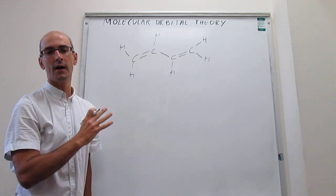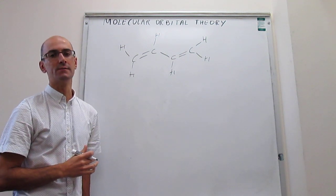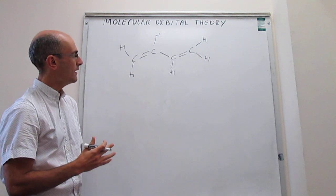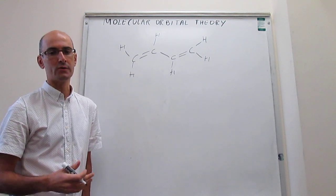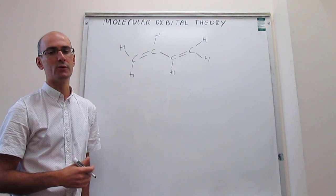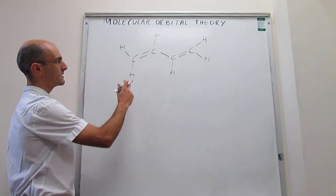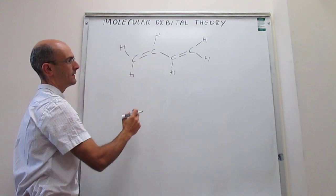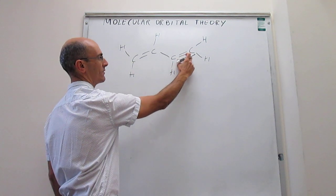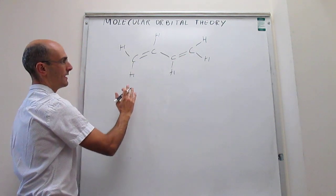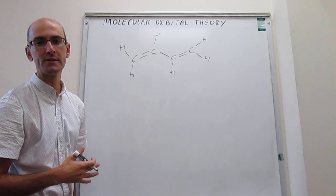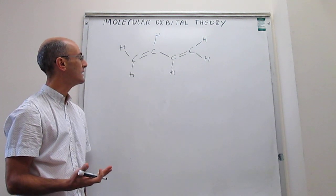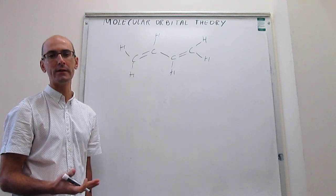Our goal here is to try to explain some features in this molecule using molecular orbital theory. When we think about the Lewis structure and how those bonds are formed, we can clearly see there's a single and a double bond between those two carbon pairs. The number of electron groups around each carbon atom would be three.